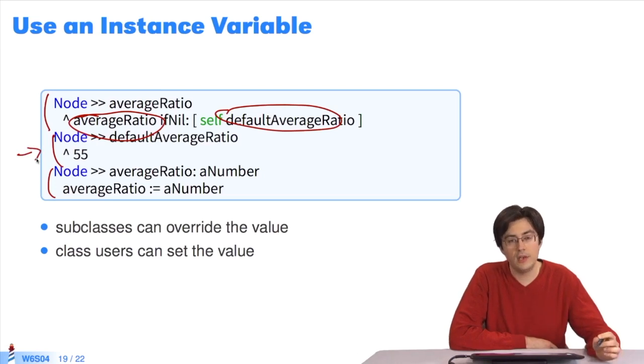With this design, subclasses can override the default average ratio and change the value. And class users can set a value by executing the program.